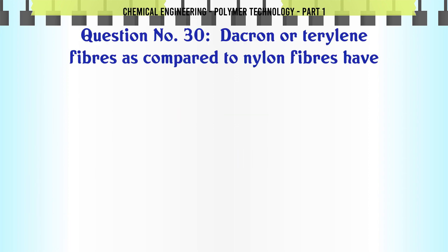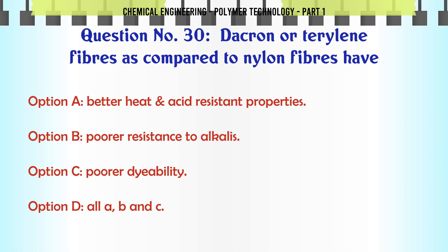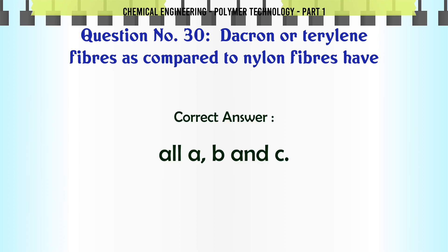Dacron or Terylene fibers as compared to nylon fibers have: A. Better heat and acid-resistant properties, B. Poorer resistance to alkalis, C. Poorer dyeability, D. All A, B, and C. The correct answer is All A, B, and C.